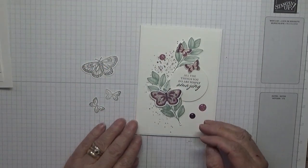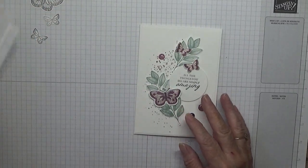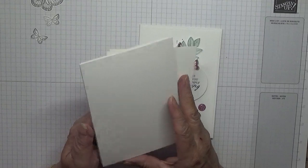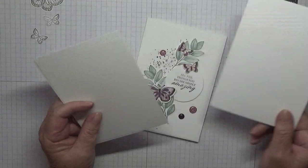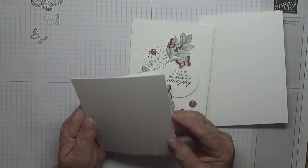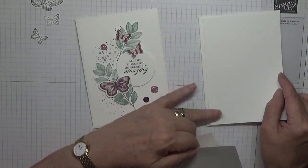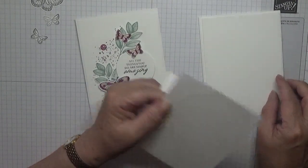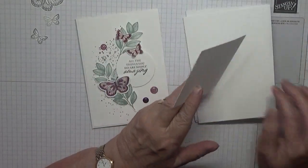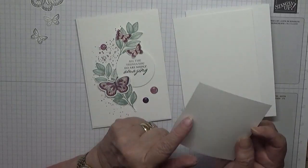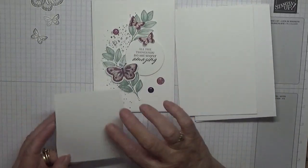We've got to color them in which we'll do afterwards, but first of all, card base is white card base, eight and a quarter by five and seven eighths scored at four and one eighth. I have two pieces of white card stock, one at basic white, both of them at five and five eighths by three and seven eighths, one on the inside, one for the top, and a scrap of white for the leaves and the circle.